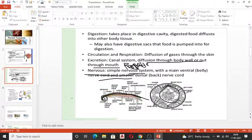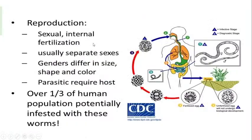Some, especially Ascaris, may be viviparous, directly producing larvae. The young one resembles the adult and is called a juvenile. They are unisexual organisms with sexes easily differentiated. The female worm is longer than the male. Some are oviparous and some viviparous — laying eggs or directly giving larvae.